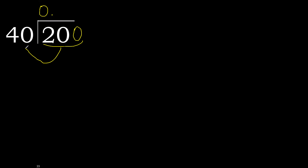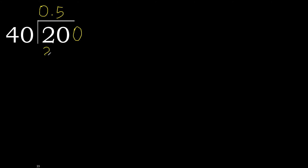200 is not less, therefore work with 200. 40 multiplied by which number is nearest to 200 but not greater? 40 multiplied by 6 is greater, so multiply by 5: 40 times 5 equals 200.